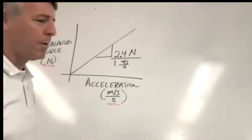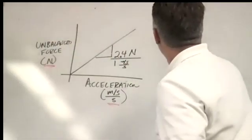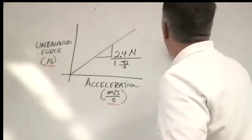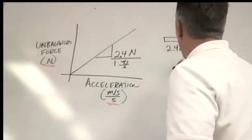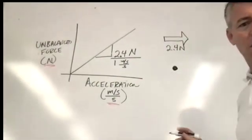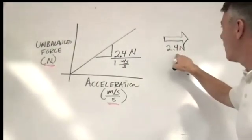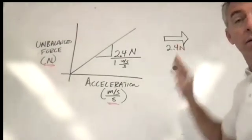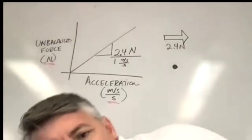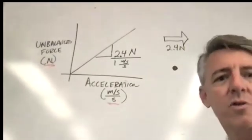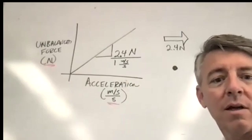Let me rephrase that for you. You have 2.4 newtons acting on the fan cart — an unbalancedness. So wait, let me check this. Is the VAD closed or open? It is open. So is it constant velocity or changing velocity? It's changing. Good — it's changing velocity.